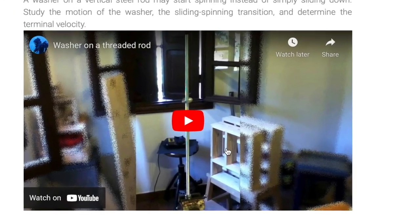The spinning washer. This looks like a fun investigation. A washer on a vertical steel rod starts spinning instead of simply sliding down the pole. Study the motion of the washer, the sliding spinning transition, and determine its terminal velocity.